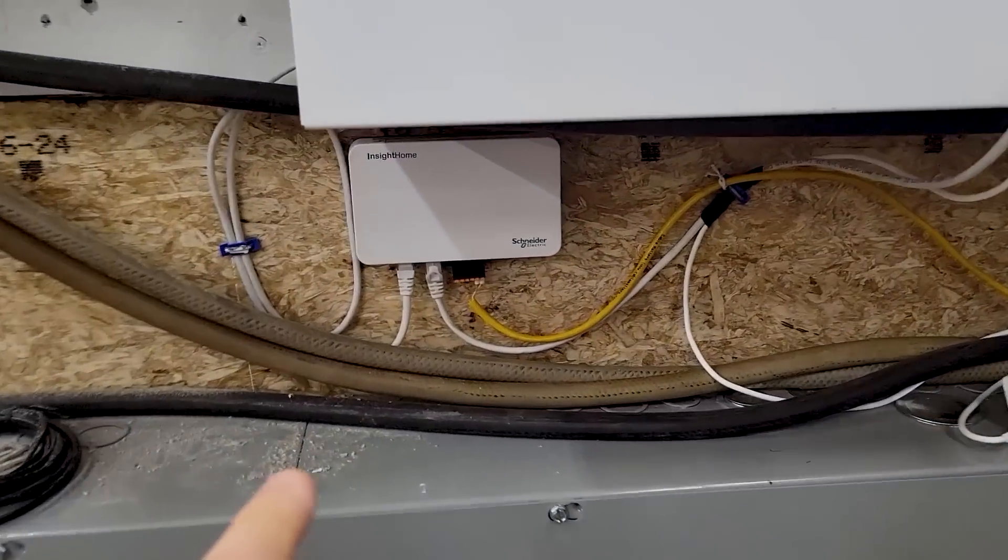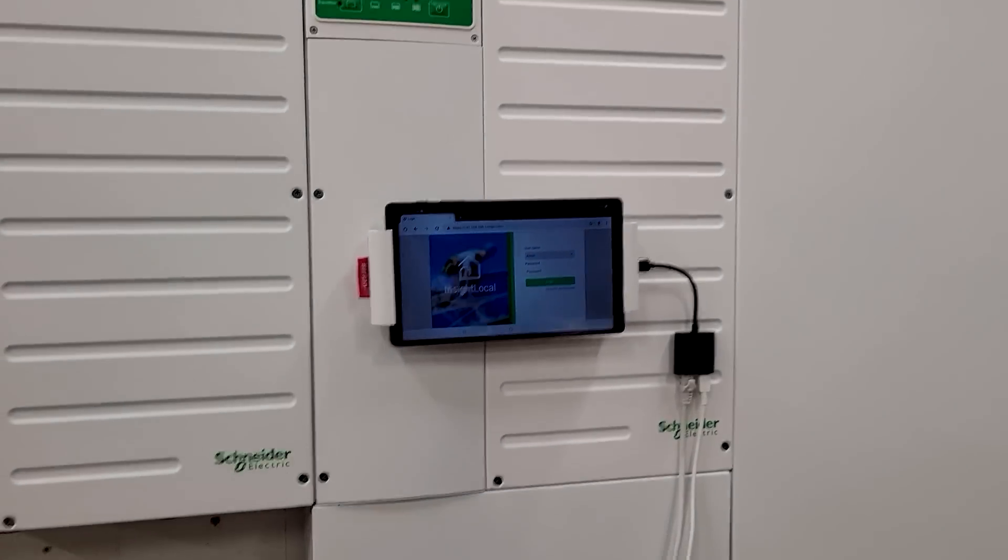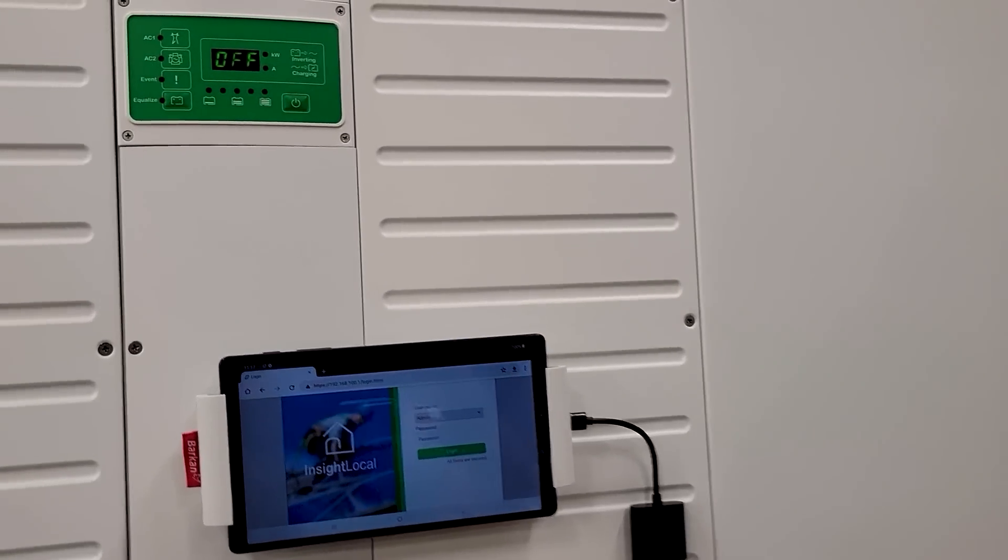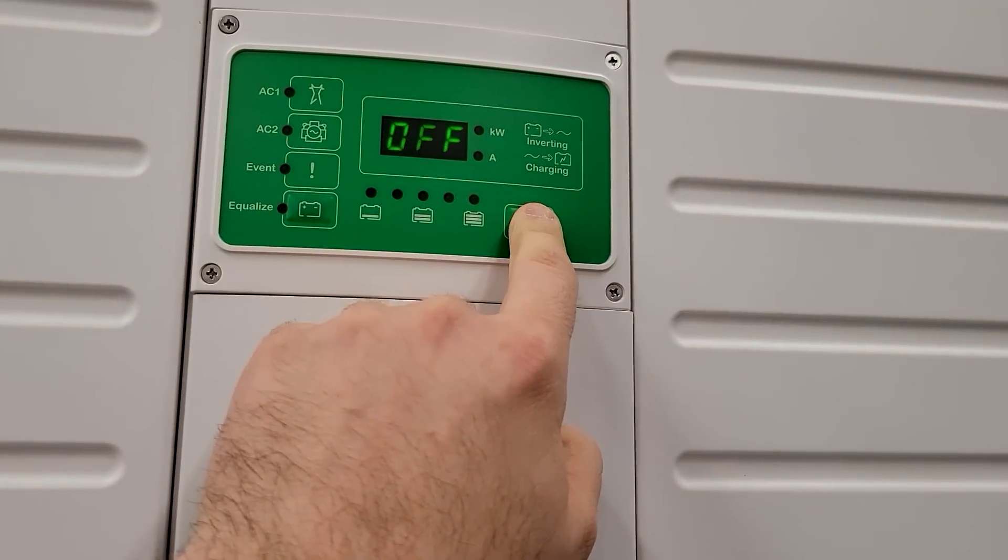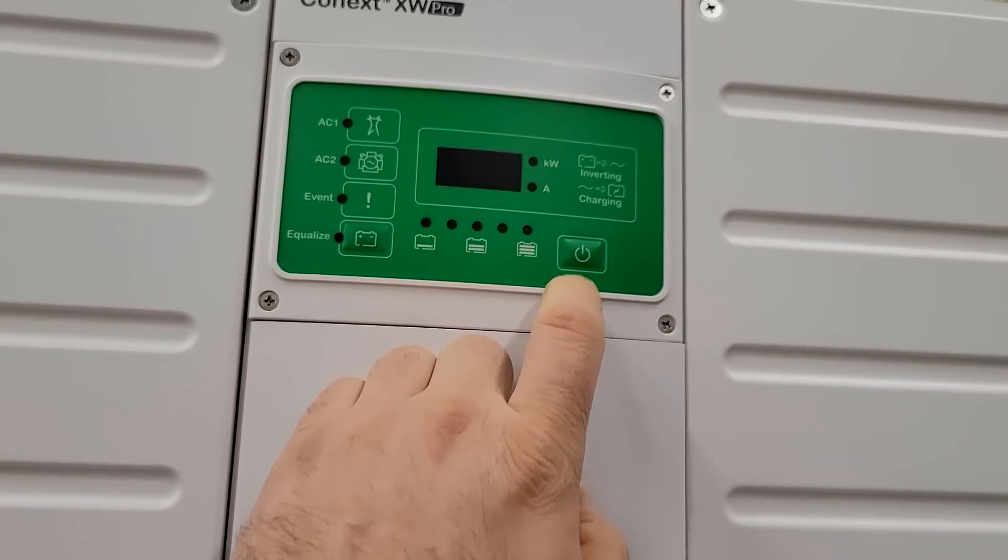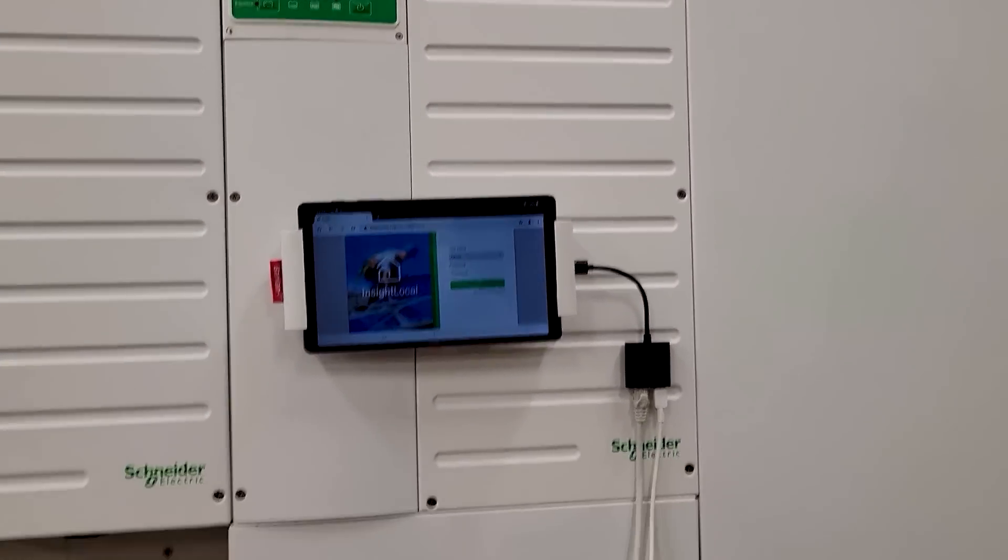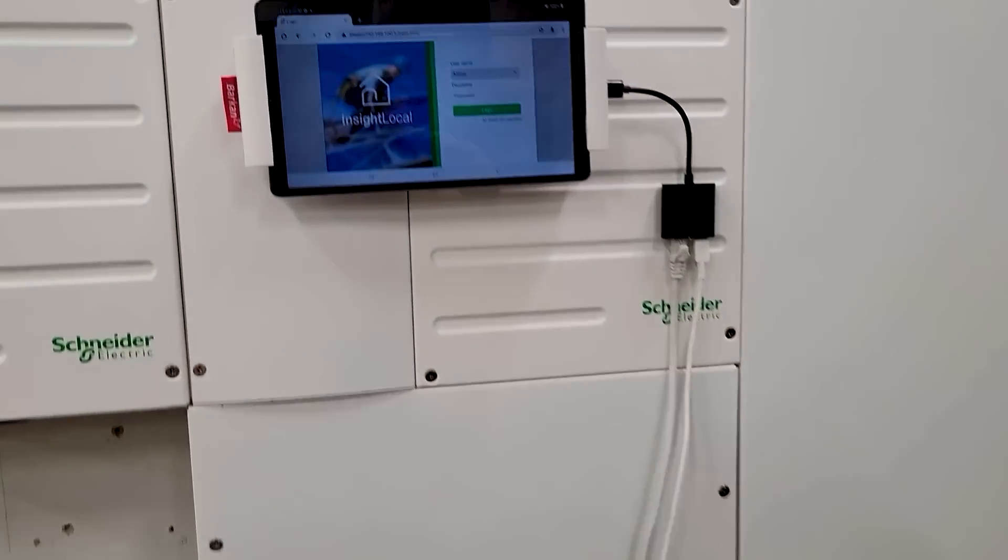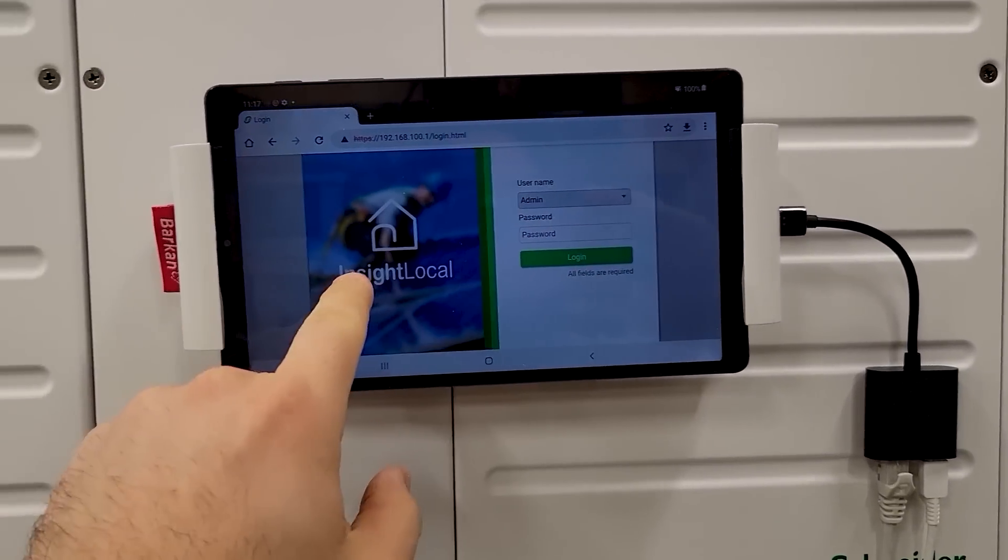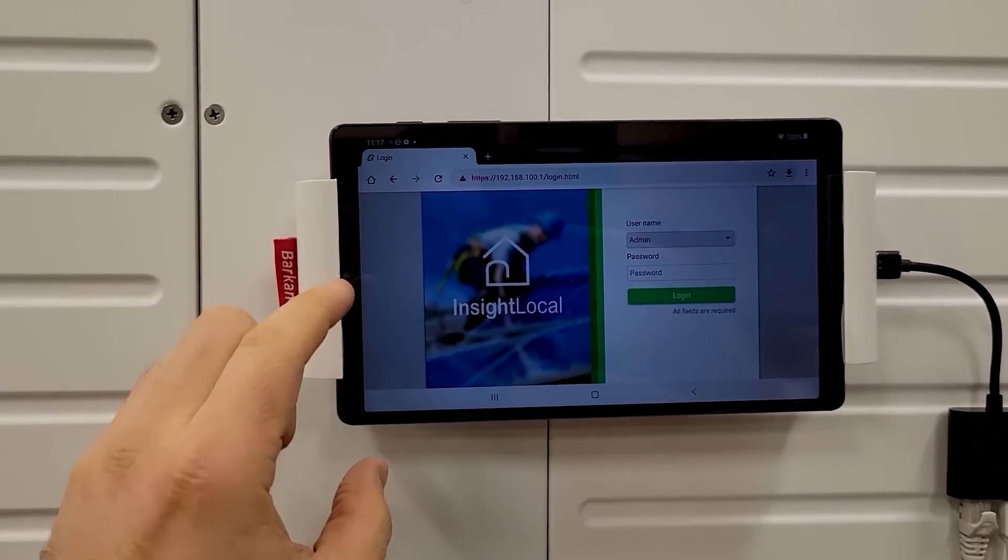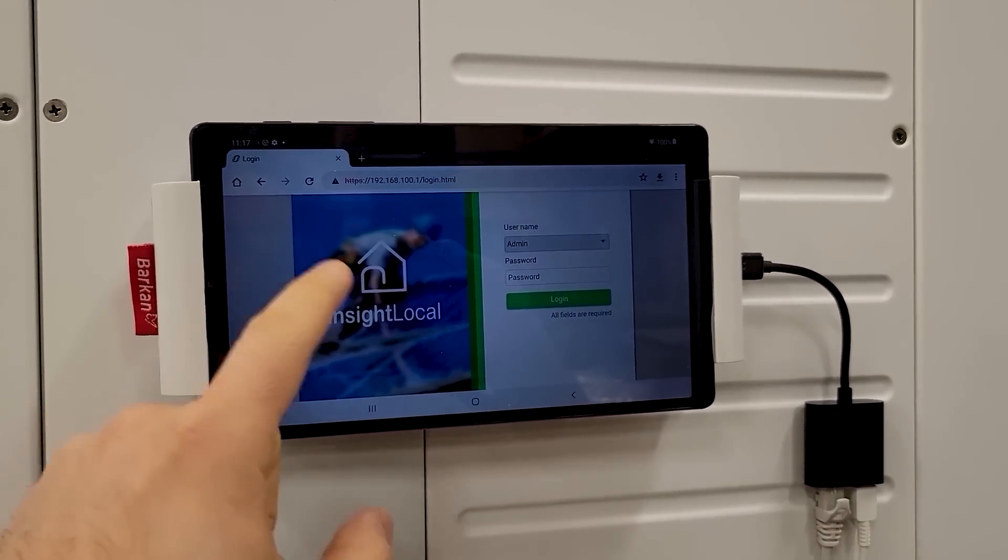Okay, now all that stuff is plugged in. The Insight Home is going to be off because our inverter is currently off. So we need to turn that inverter back on. Now that the inverter is on, we need to program the Insight Home to recognize the battery. I could do this through the tablet here, but I'm going to do it on my laptop so that I can screen record it.